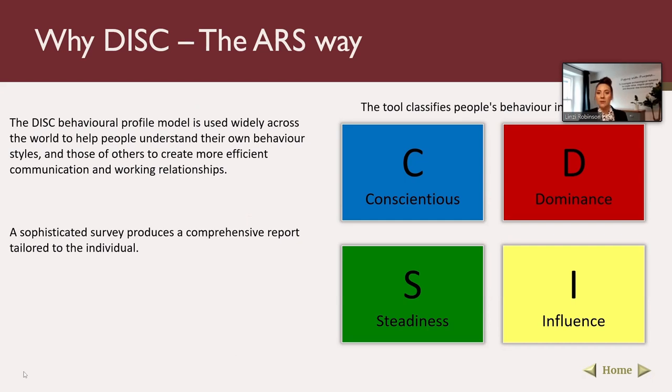The four behavior types are: High D, which is a dominant character; High I, which is an influencer; S for steadiness; and C for conscientious. I'll go into further detail on the tendencies of each profile. It's worth saying that these are tendencies — it's not saying that everybody will portray those characteristics all the time. It is a tendency, and it's saying that you can go into that mode.